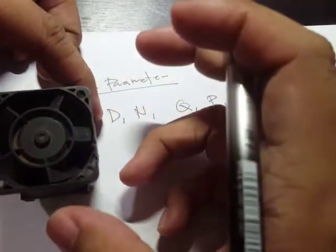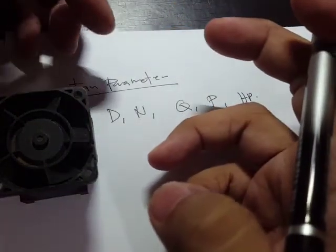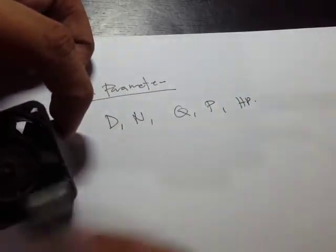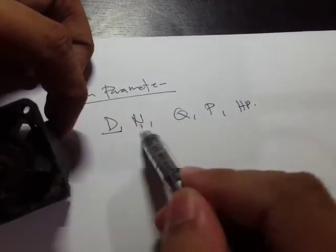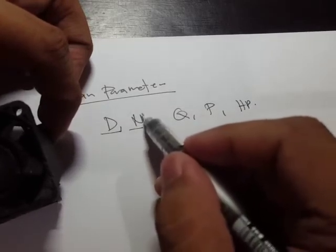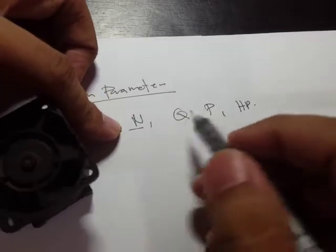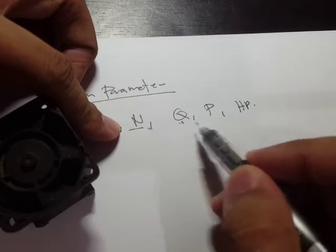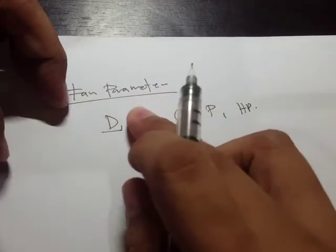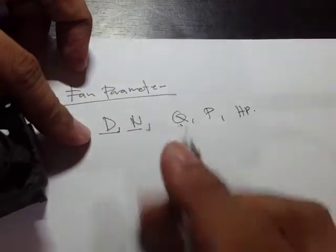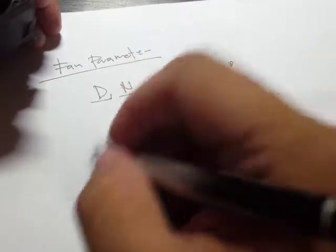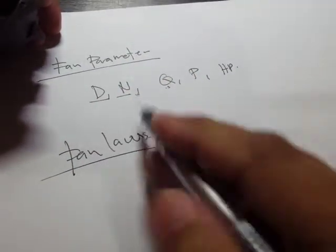For example, if we have a larger diameter fan, it will have a different performance. Or if we have this diameter and I double the speed, the flow rate will also double. So basically, if we change the speed while holding the diameter constant, what's going to be the effect on the flow rate, the pressure, and the horsepower? Or if we hold speed constant and change the diameter — make it larger — what's the effect on flow rate, pressure, and horsepower? That's essentially what fan laws describe.